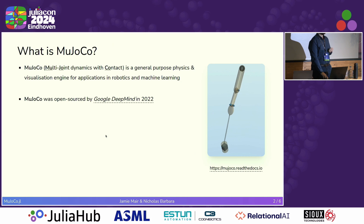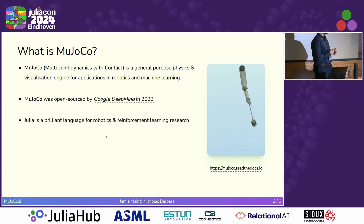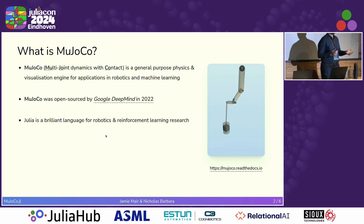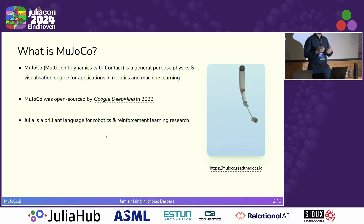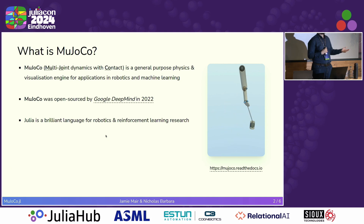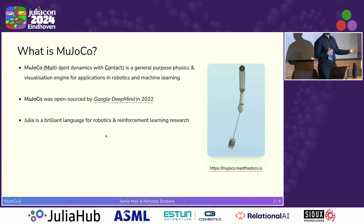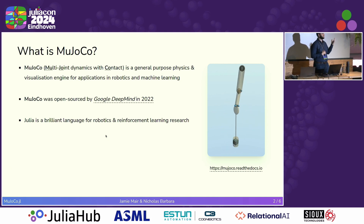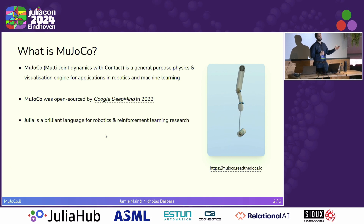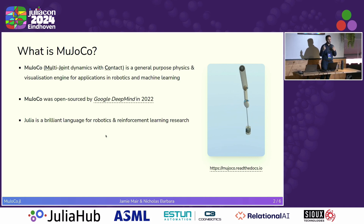The reason we did this is because both Nick and I believe that Julia is a really good language for doing robotics and reinforcement learning research, because you can get really high performance and be very productive, iterating quickly on your ideas.